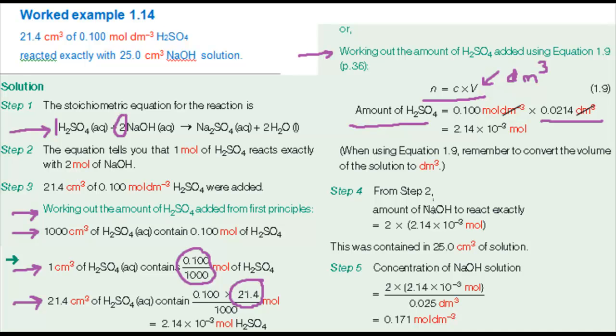There are two problems with using equation 1.9. Students, particularly in exams, often get the equation wrong or forget to convert the volume of solution to decimetres cubed. So, the method from first principles is safer and you can miss out the middle stage of finding the amount in one centimetre cubed of solution as you become more confident.